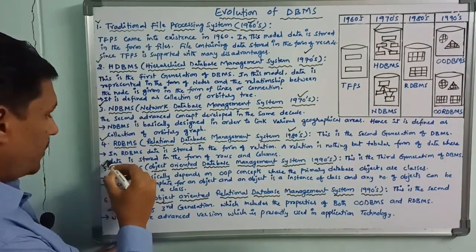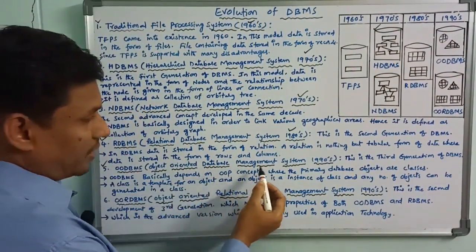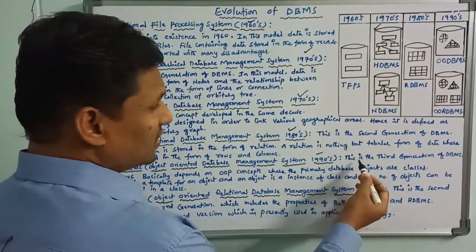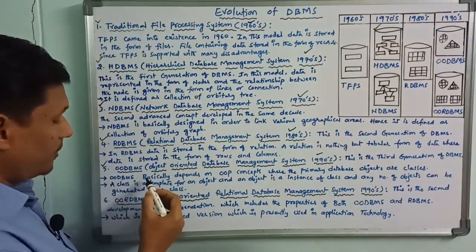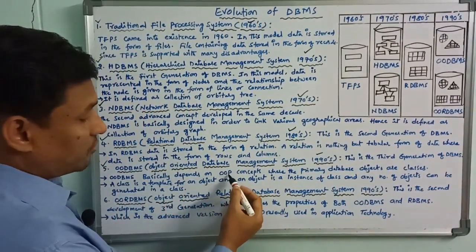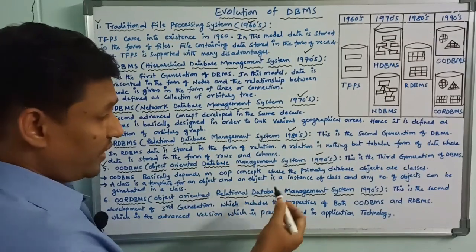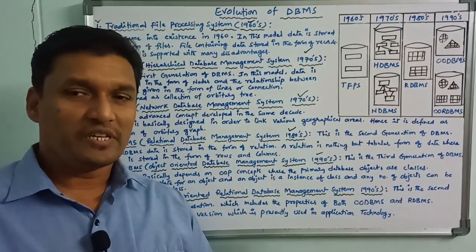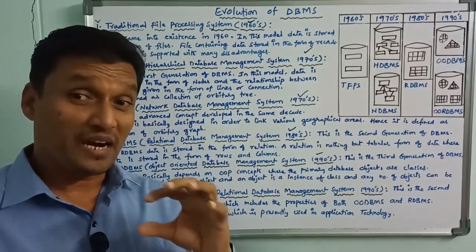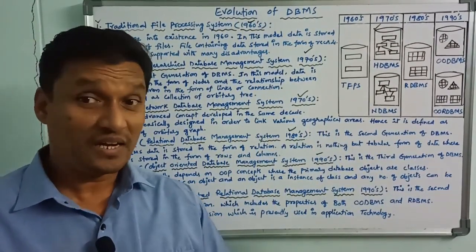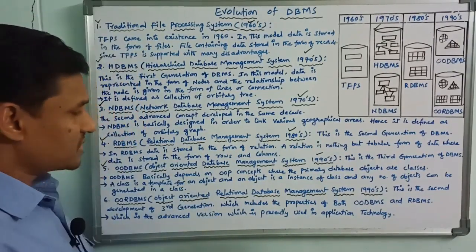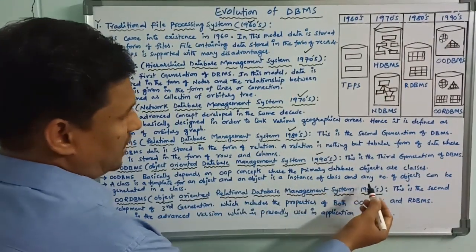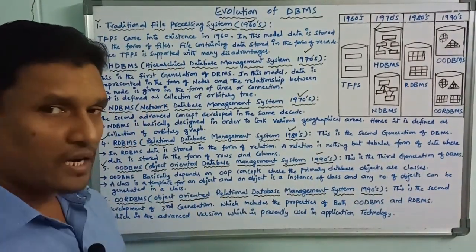OODBMS — object-oriented database management system — is the third generation of DBMS. OODBMS basically depends on object-oriented programming concepts, where the primary database objects are classes. A class is a template for an object, and an object is an instance of a class. Any number of objects can be generated from a class.